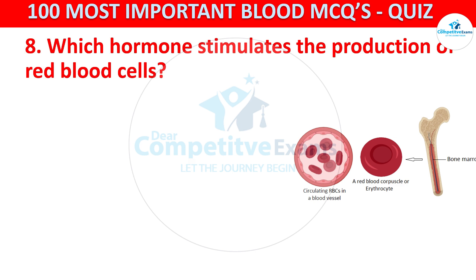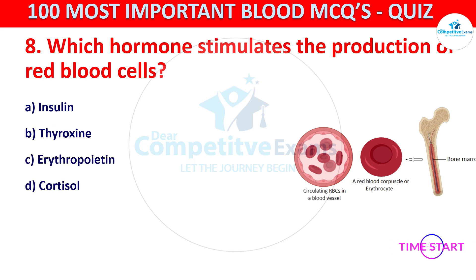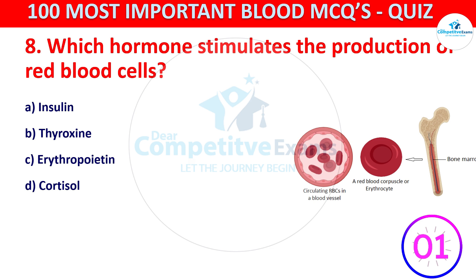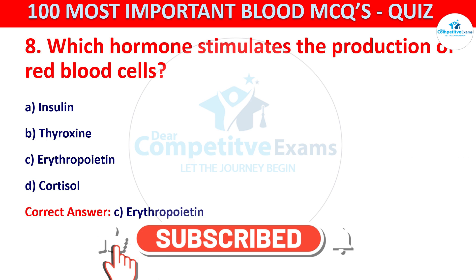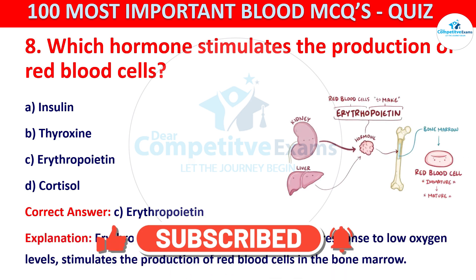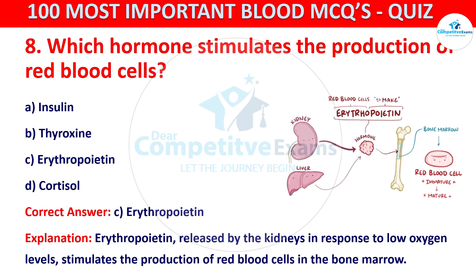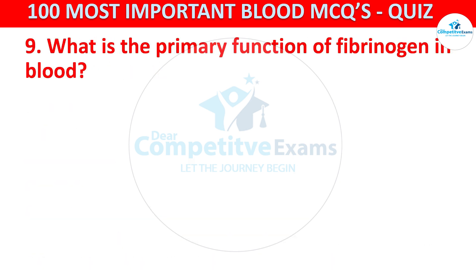Your options are insulin, thyroxine, erythropoietin, or cortisol. The correct answer is C, that is erythropoietin. Erythropoietin is released by the kidneys in response to low oxygen levels and stimulates the production of red blood cells (RBCs) in the bone marrow. Question number nine: what is the primary function of fibrinogen in the blood?